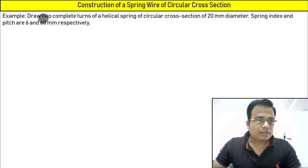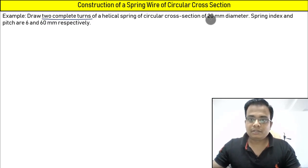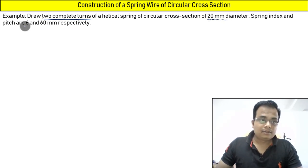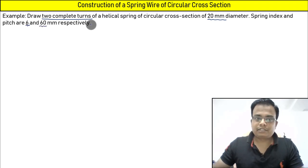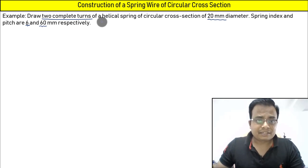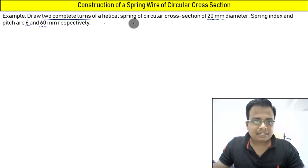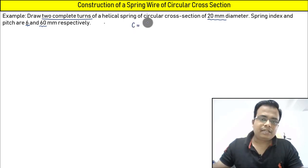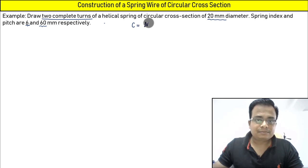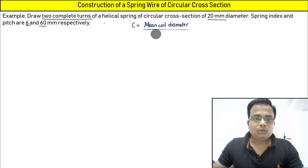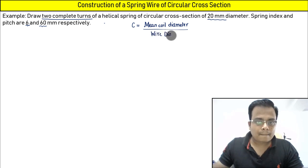Draw two complete turns — two revolutions, very important — of a helical spring having circular cross section. The wire diameter is 20. The spring index has been given as 6 and pitch has been given as 60. Spring index is represented by C, and C is nothing but the ratio of mean coil diameter to the wire diameter.